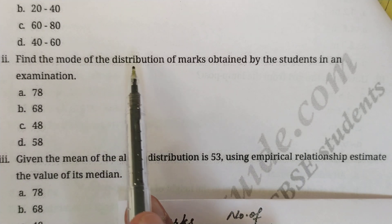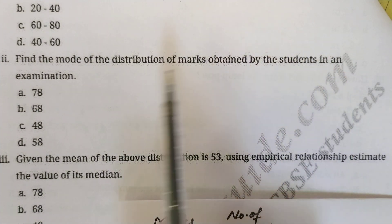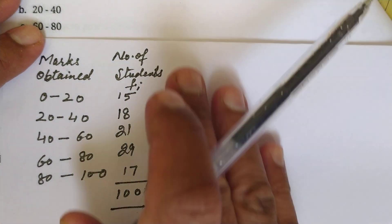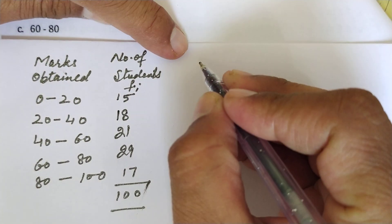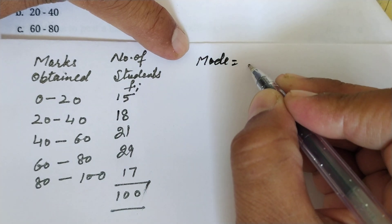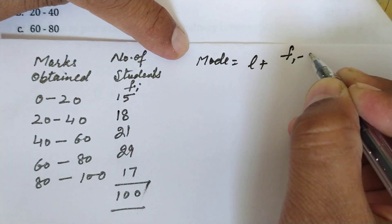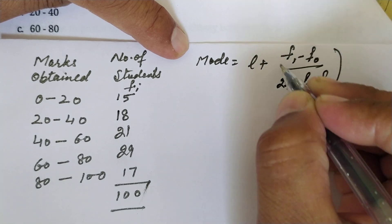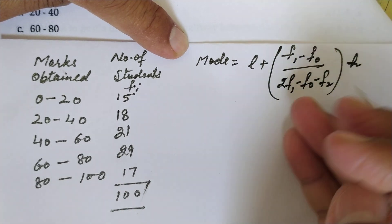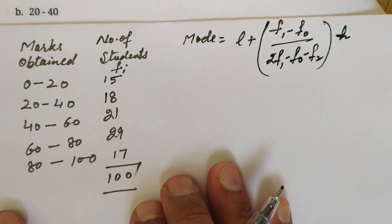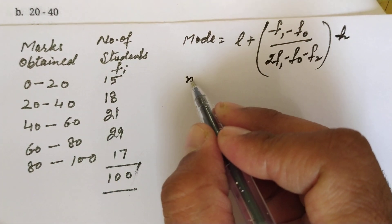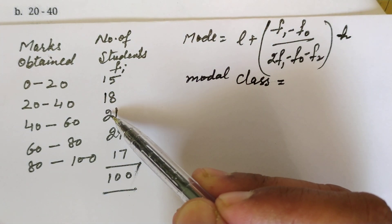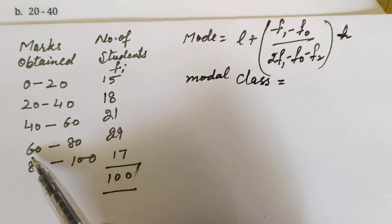The second question asks to find the mode of the distribution of marks. To find the mode, we use the formula: Mode = L + [(f1 - f0) / (2f1 - f0 - f2)] × h. The modal class, where frequency is maximum at 29, is 60 to 80.